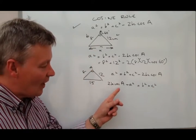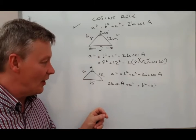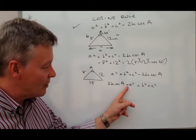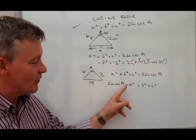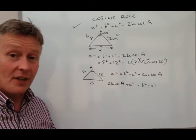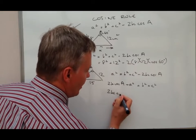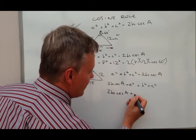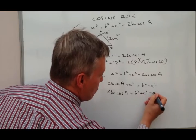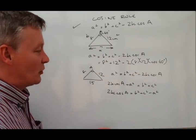Well, I'm really interested in cosine A on its own. So I need to just get rid of this positive A squared, which was from over here. I'm going to minus A squared from both sides. So that will give me 2BC cosine A equals B squared plus C squared minus A squared.